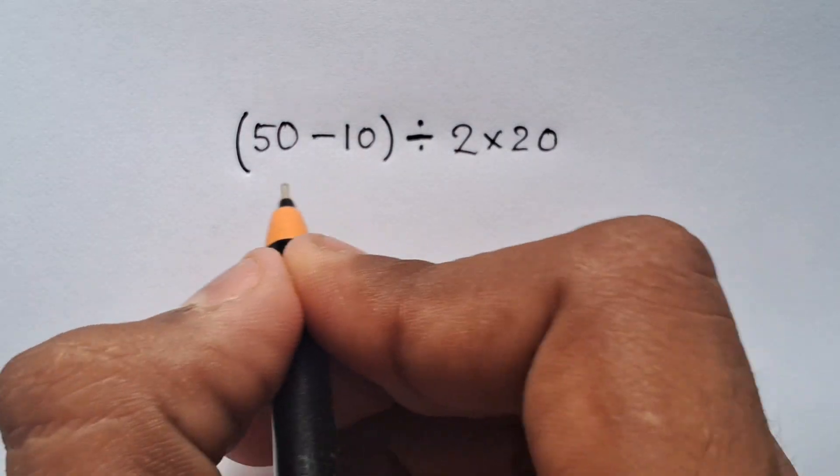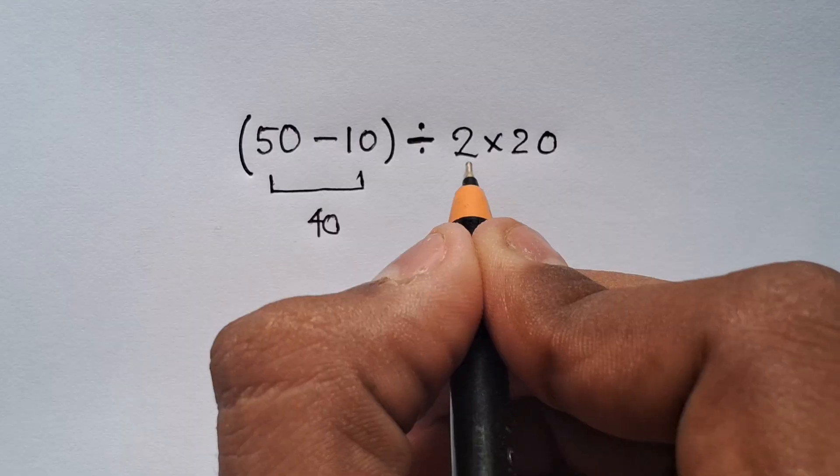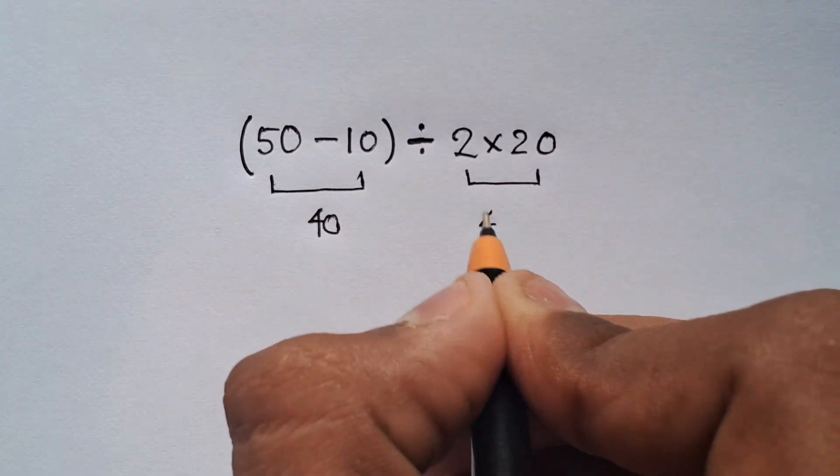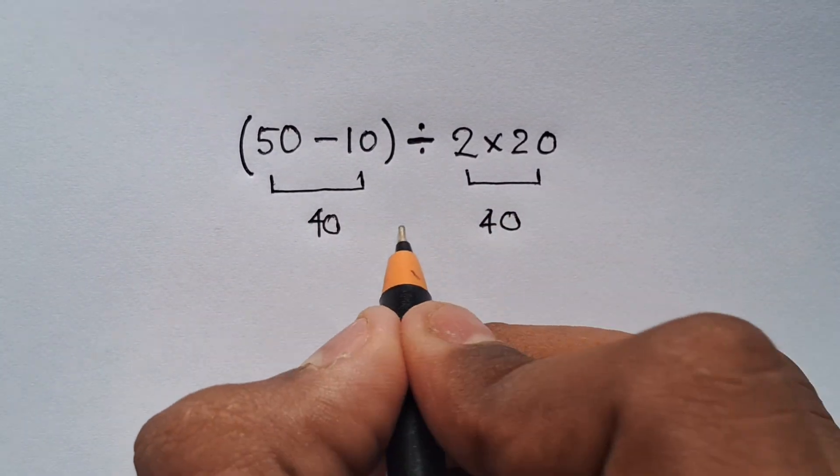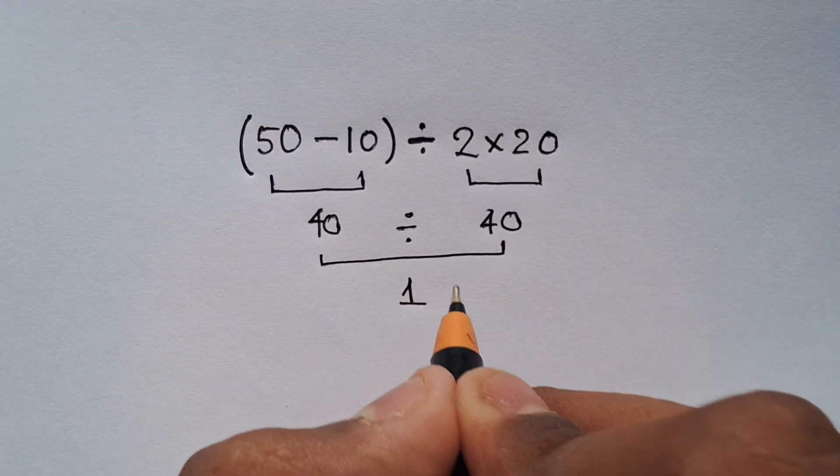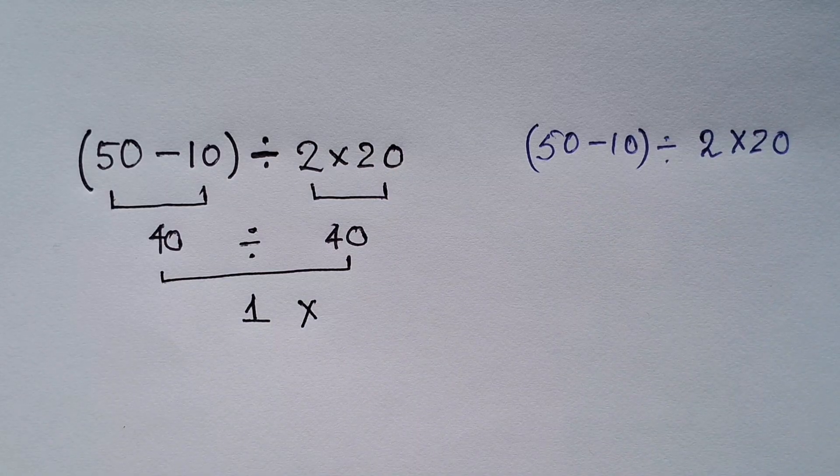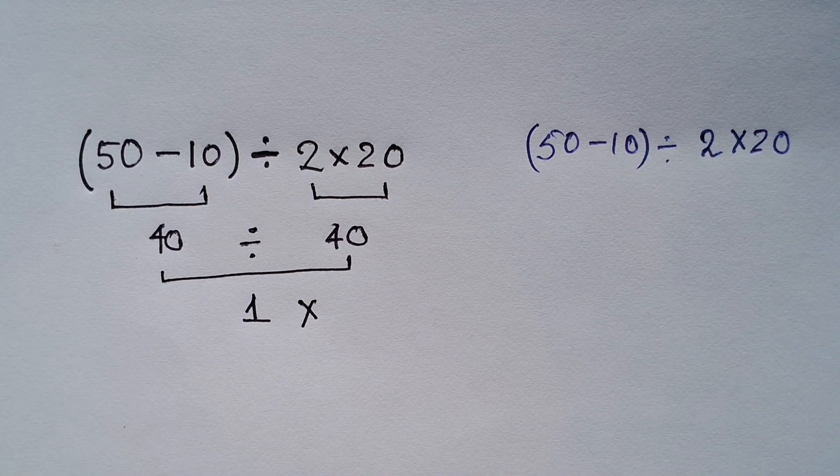50 minus 10 equals 40, and 2 times 20 also equals 40, so 40 divided by 40 equals 1. But this is not the correct answer for the expression. The answer 1 is totally wrong according to the order of operations.